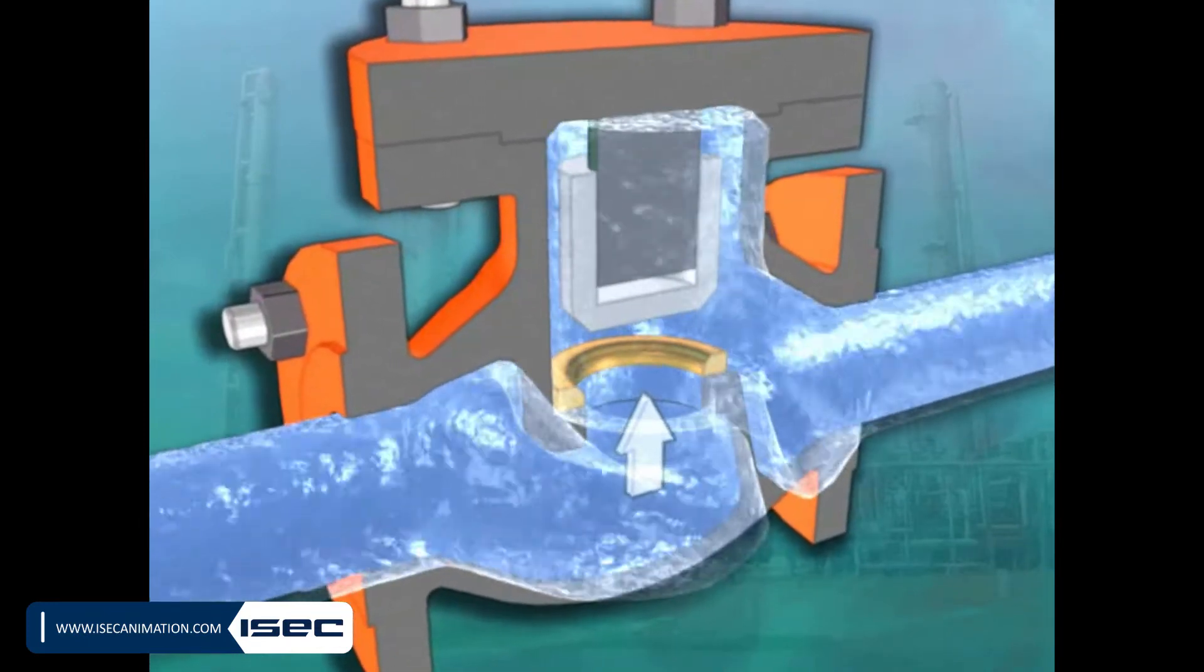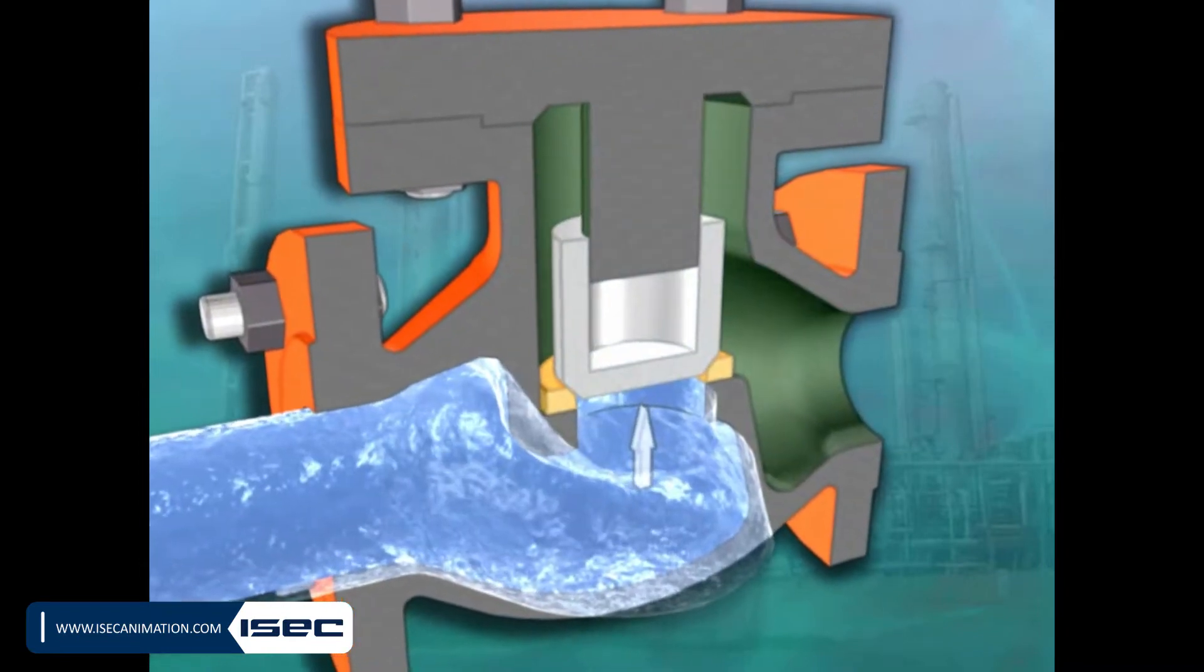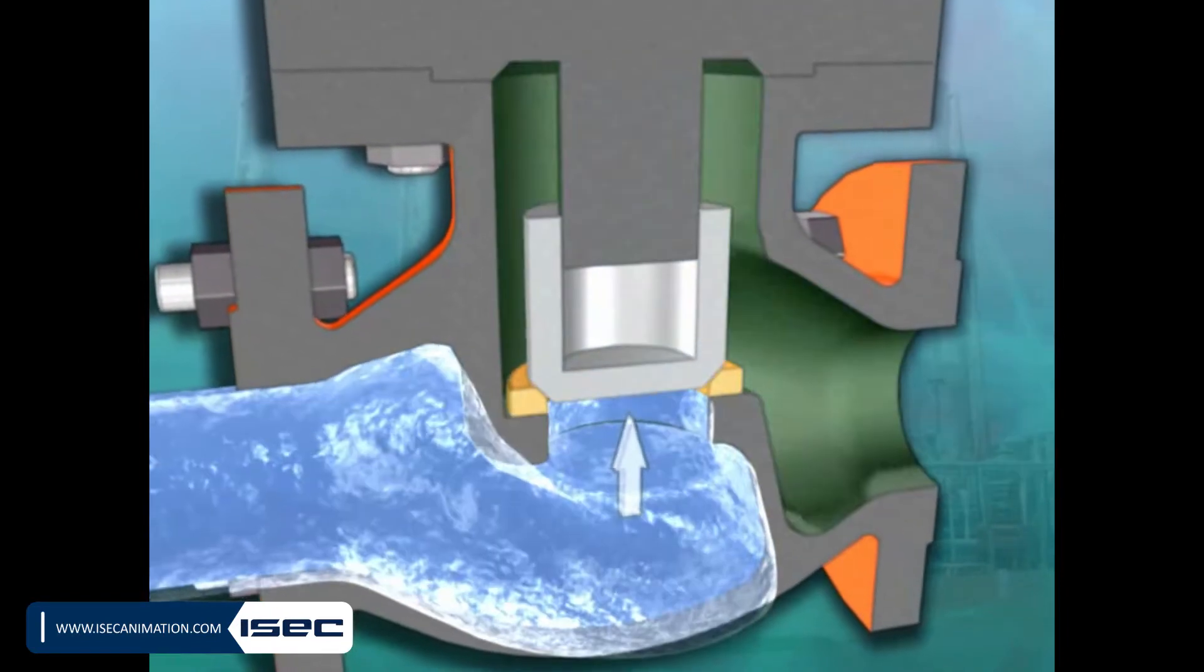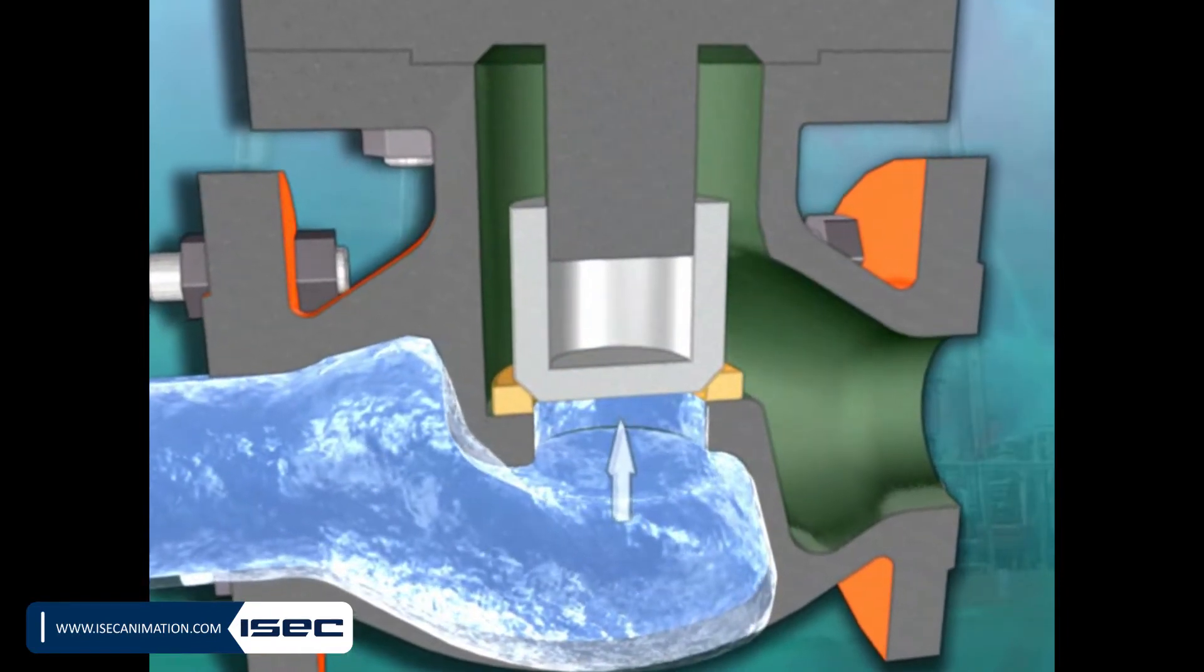In this type of check valve, the disc moves in line of the flow path. This valve is suitable for horizontal and vertical fluid flows with upward flow path.